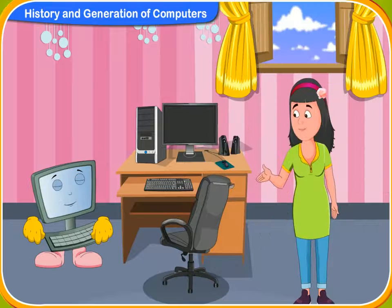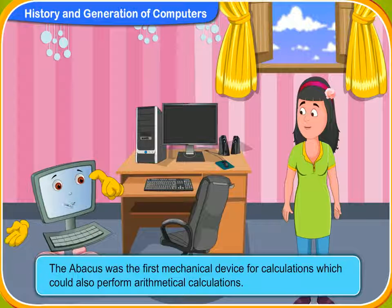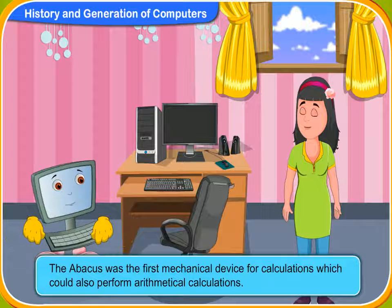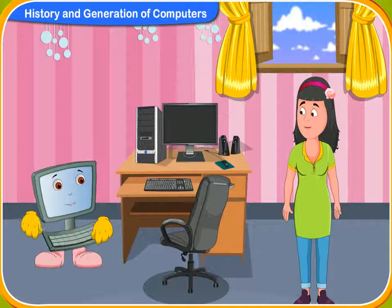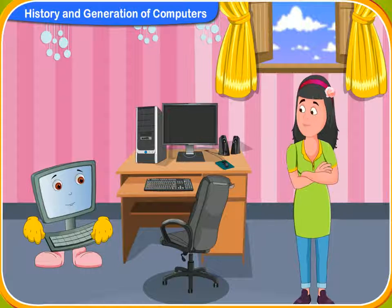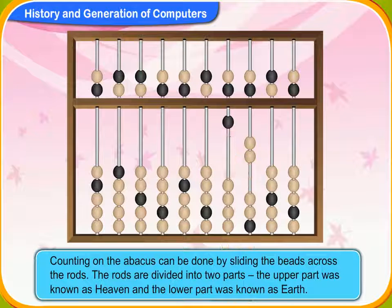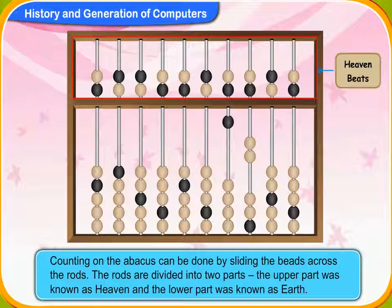Tell me more about the abacus. The abacus was the first mechanical device for calculation which could also perform arithmetical calculations. Do you remember what an abacus looked like, Rini? Yes. It is made of a wooden frame with rods, each having beads. That's right. Counting on the abacus can be done by sliding these beads across the rods. The rods are divided into two parts — the upper part was known as heaven and the lower part was known as earth.